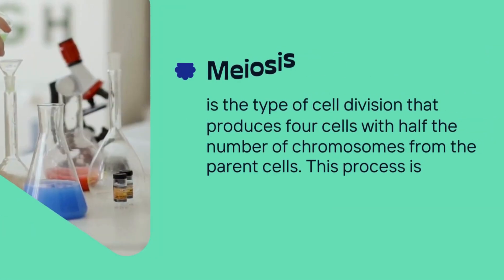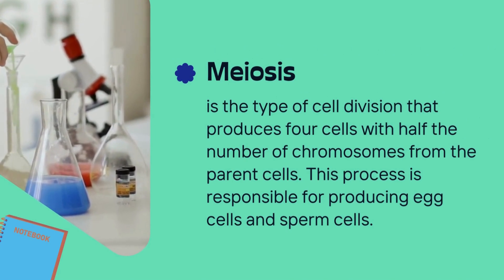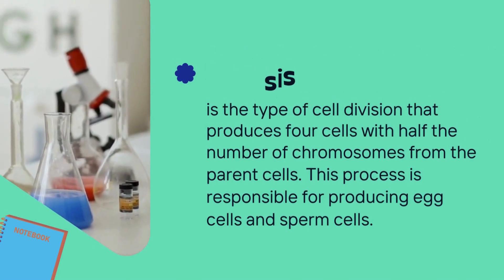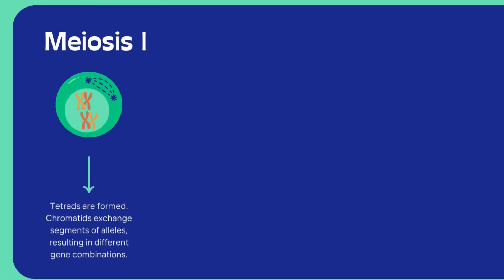In meiosis, one cell is divided into four cells, but in mitosis one cell is divided into two cells. In mitosis, the nucleus combination remains the same — there are no genetic changes and no variation. But in meiosis there are variations produced; new types of genetic material are formed with various changes. In this way, a new type of species is formed with some genetic changes from their parents.